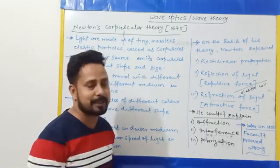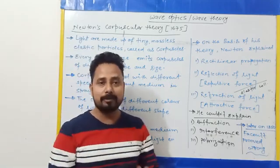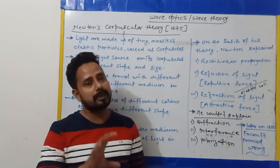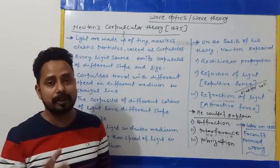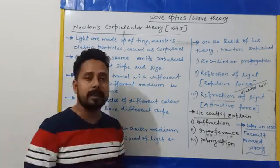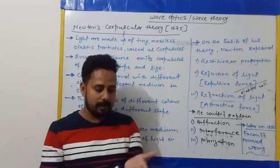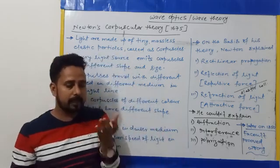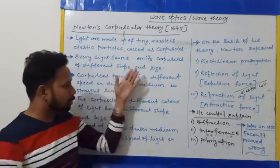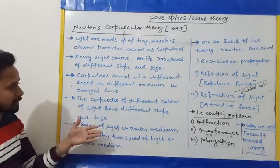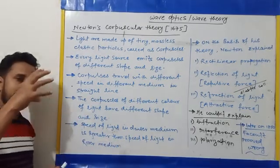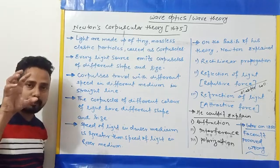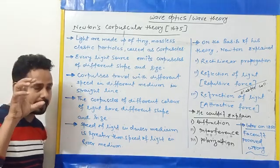Regarding reflection and refraction of light, Newton explained them, but his logic was different. For reflection, he assumed a reflecting surface — just like a mirror. He said light travels in the form of small corpuscles, small particles, and when a particle of light strikes the surface, it bounces back.